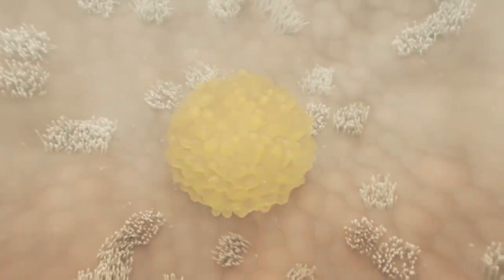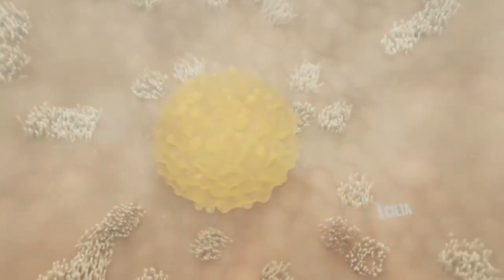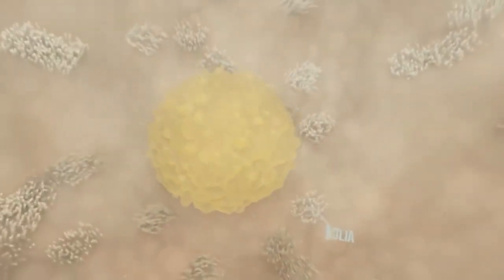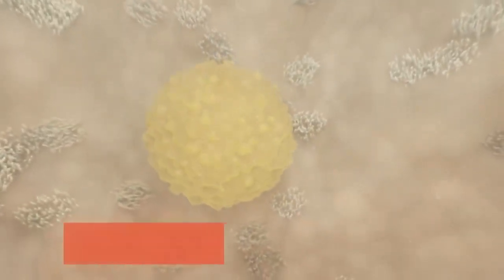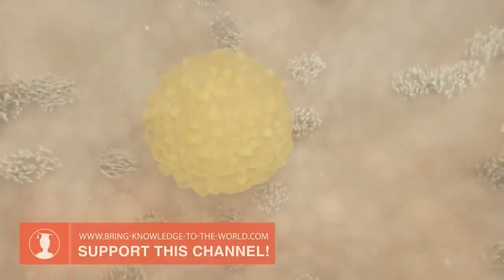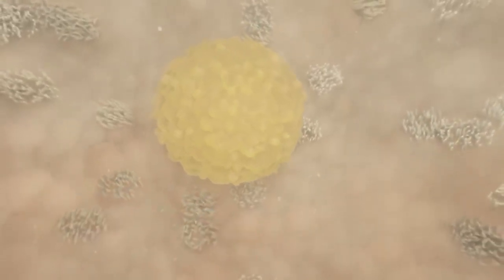The egg cell is transported inside the fallopian tube with the help of cilia and mucus produced by glands in the walls of the fallopian tube. Additional contractions of the muscle layers help to transport the ovum.